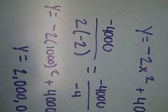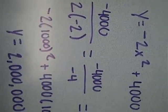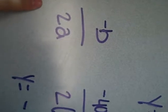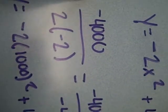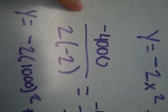Then we plugged it into the negative B over 2A equation, and so we plugged in negative 4000 over 2 times negative 2, which was negative 4000 over negative 4, which equals 1000. And so that is the X value of the vertex.